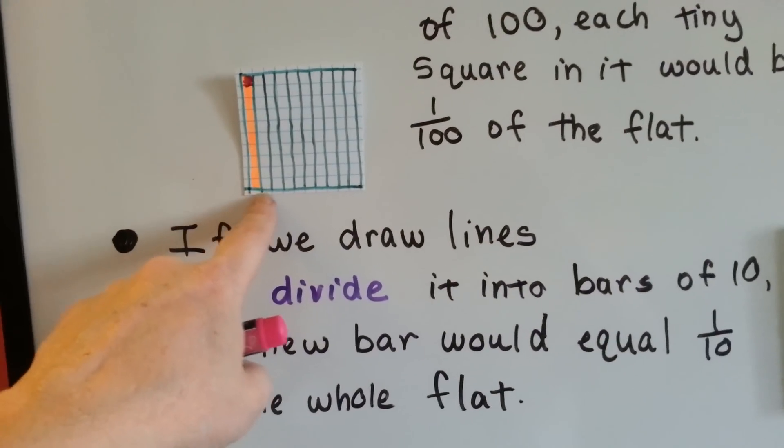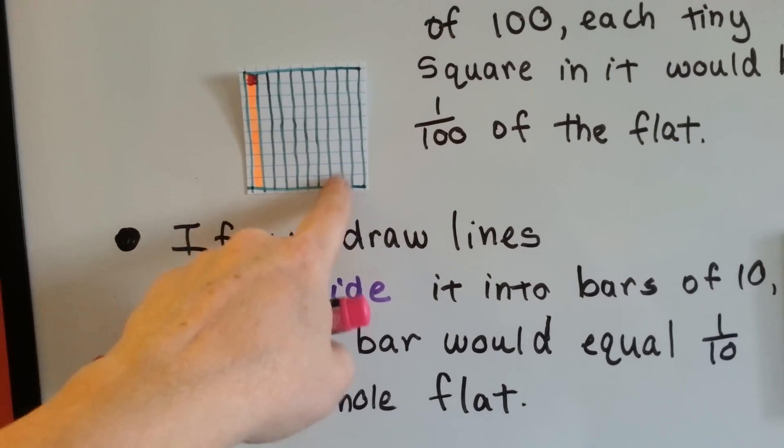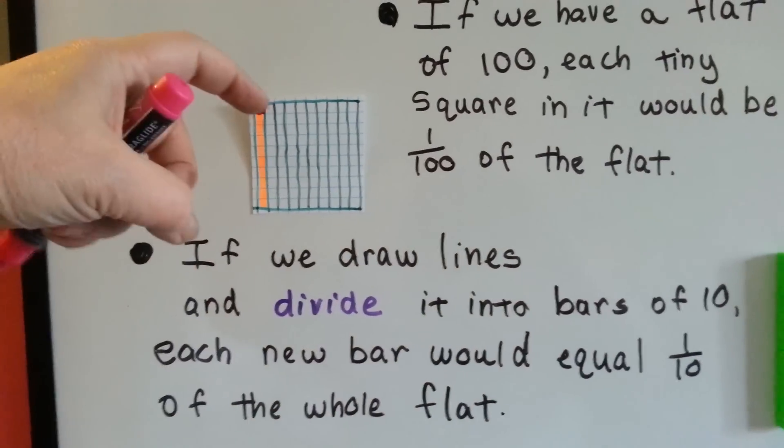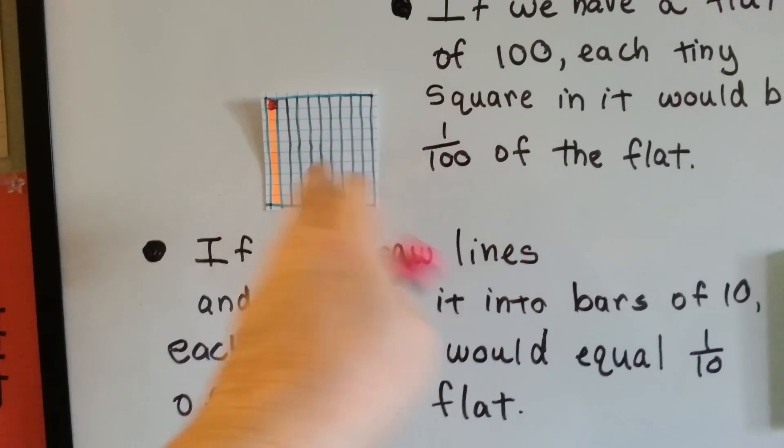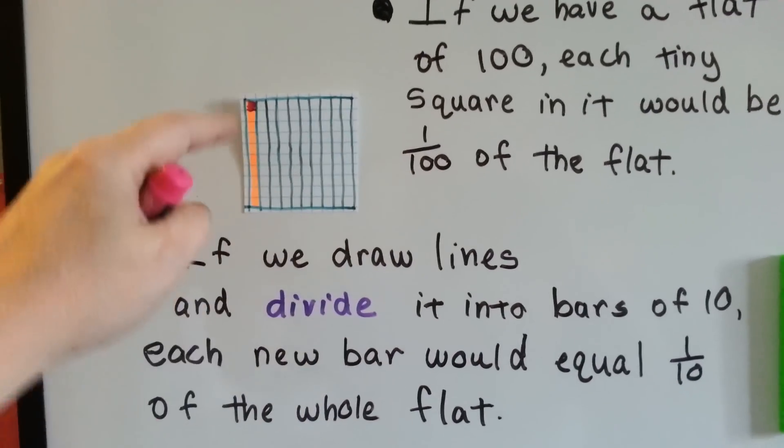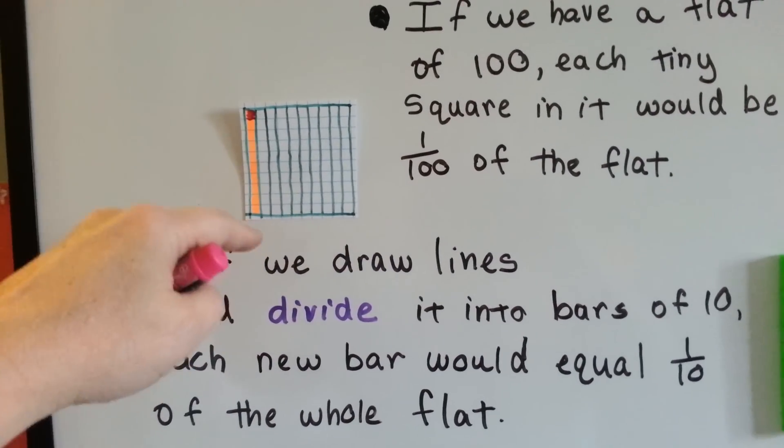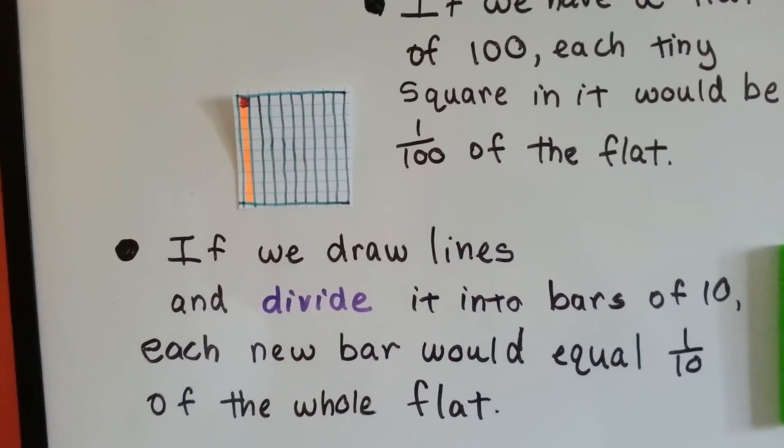Because there's ten of them. One, two, three, four, five, six, seven, eight, nine, ten. So instead of one hundred tiny little squares, we can say we're going to ignore the lines going horizontally, and we're just going to look at the vertical lines and say that now it's split into tens.